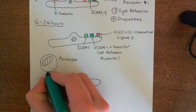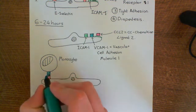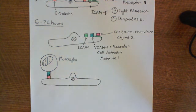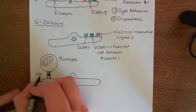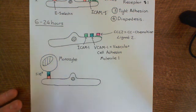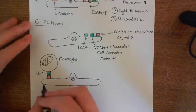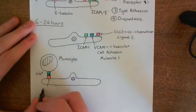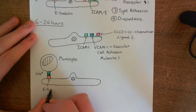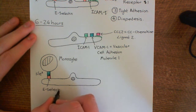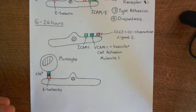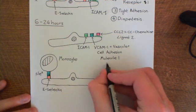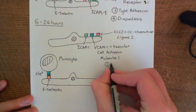Sialyl-lewis-X is a small carbohydrate molecule attached to proteins on the surface of the monocyte. Its abbreviation is S-LE-X: S for sialyl, LE for Lewis, and X. The interactions between sialyl-lewis-X on the monocyte and E-selectin on the endothelial cell cause the monocyte to roll on the surface of the endothelium — this is the first phase: rolling.